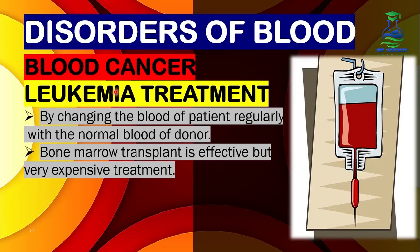Now let's look at how leukemia can be treated. Number 1: by regularly replacing the patient's blood with normal blood from a donor — a healthy person. Number 2: bone marrow transplant, which is an effective but very expensive treatment.